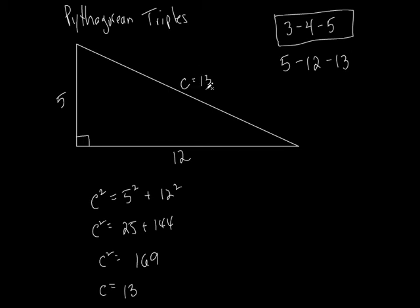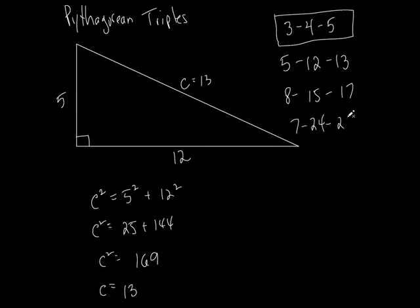Here are two more: eight-fifteen-seventeen is a Pythagorean triple because eight squared plus fifteen squared equals seventeen squared. And seven-twenty-four-twenty-five is another one — seven squared plus twenty-four squared equals twenty-five squared. You can verify these on your calculator.